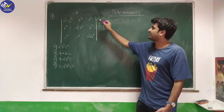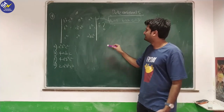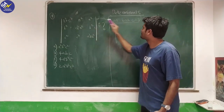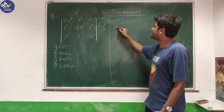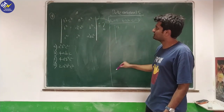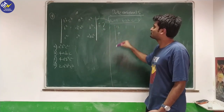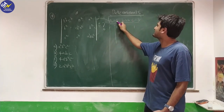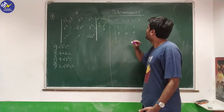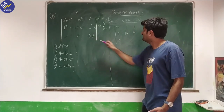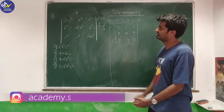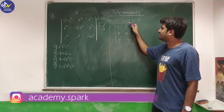Substituting A=1, B=2, C=3 into the determinant: B² + C² = 4 + 9 = 13; A² = 1; again A² = 1; B² = 4; C² + A² = 9 + 1 = 10; B² = 4; C² = 9; and A² + B² = 1 + 4 = 5. So now we have a 3×3 determinant with these numerical values.